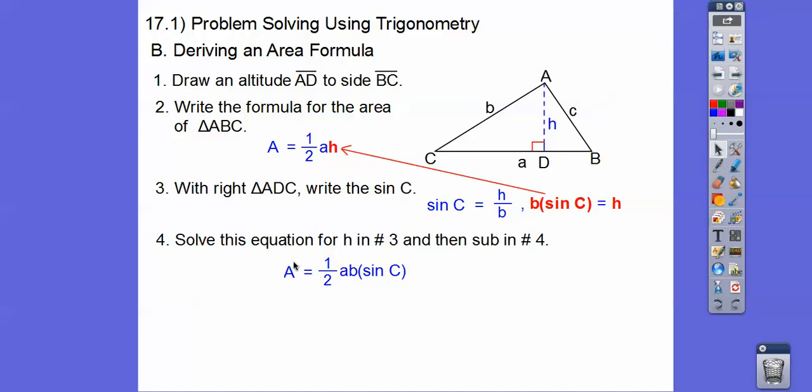And then now we're going to substitute this in for the H right here. So I'm going to put in B sine of C. So the area of the triangle is also one half AB sine of C. One half AB sine of C right there.